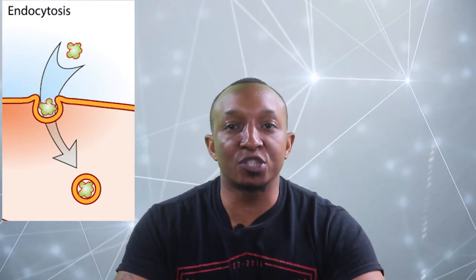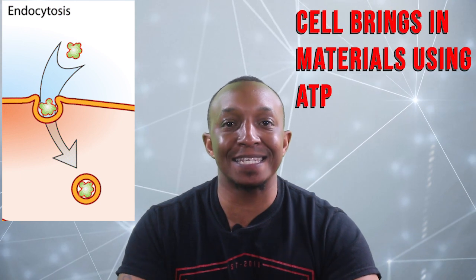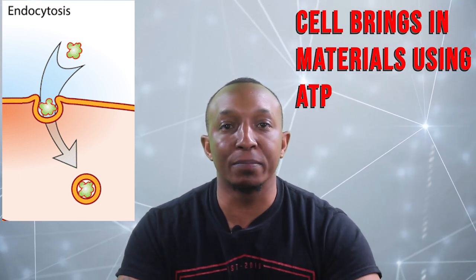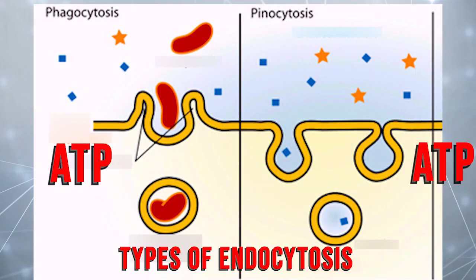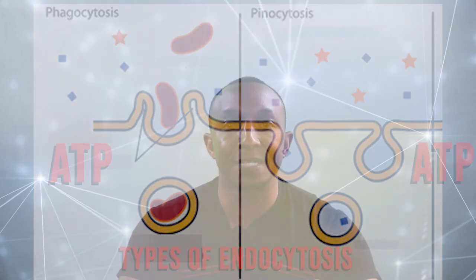Endocytosis is a type of active transport where the cell brings materials inside the cell by engulfing or folding around the material and bringing it in. Phagocytosis and pinocytosis are types of endocytosis. Once again ATP is needed to perform this process.